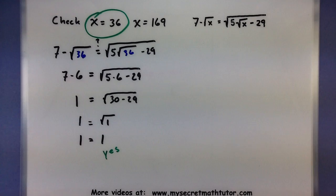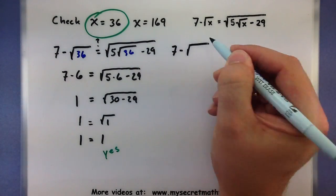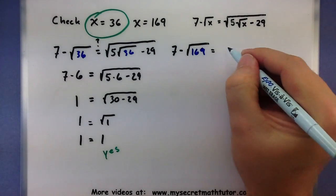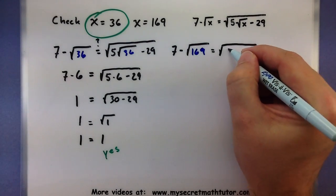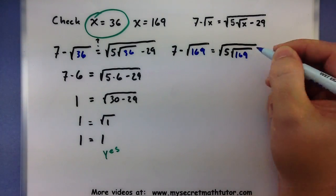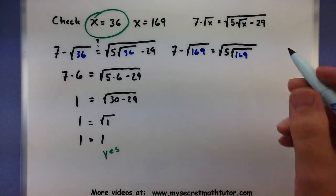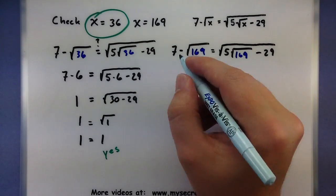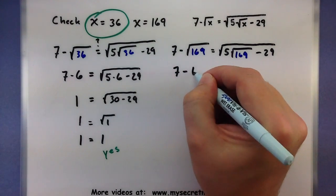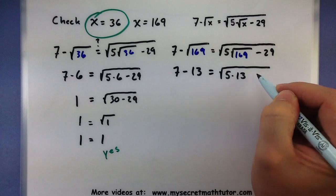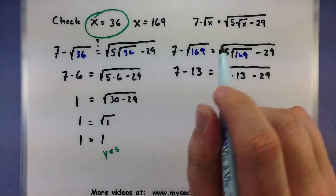So, we'll say, yes, these two things are equal. I know that x equals 36 is a solution. That's pretty tough. Let's go ahead and check the other one. 7 minus the square root. And here's what we'll put in the 169 equals the square root of 5. Square root of 169. And we'll do a little minus 29. And it's all still under that larger root. The square root of 169 is actually 13. So, those guys will simplify pretty nicely. So, 5 times 13 minus 29.